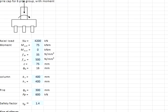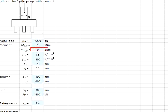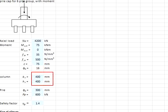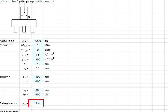I use the spreadsheet to help work out the solutions. The axial load is 4200 kN and the moment in the x-direction is 75 kNm. There is no moment on the other side. fck = 35, fyk = 500, cover = 75 mm, bar size = 16 mm, column size = 400×400, pile size = 300 mm with capacity of 600 kN, and the factor of safety assumed is 1.4.